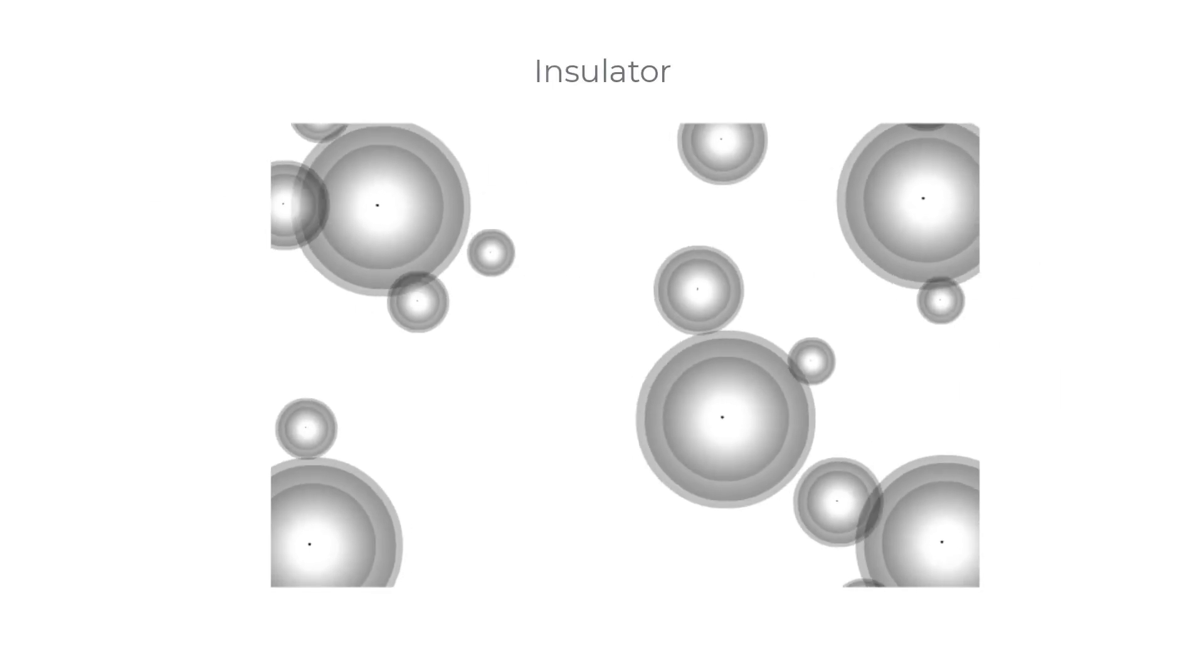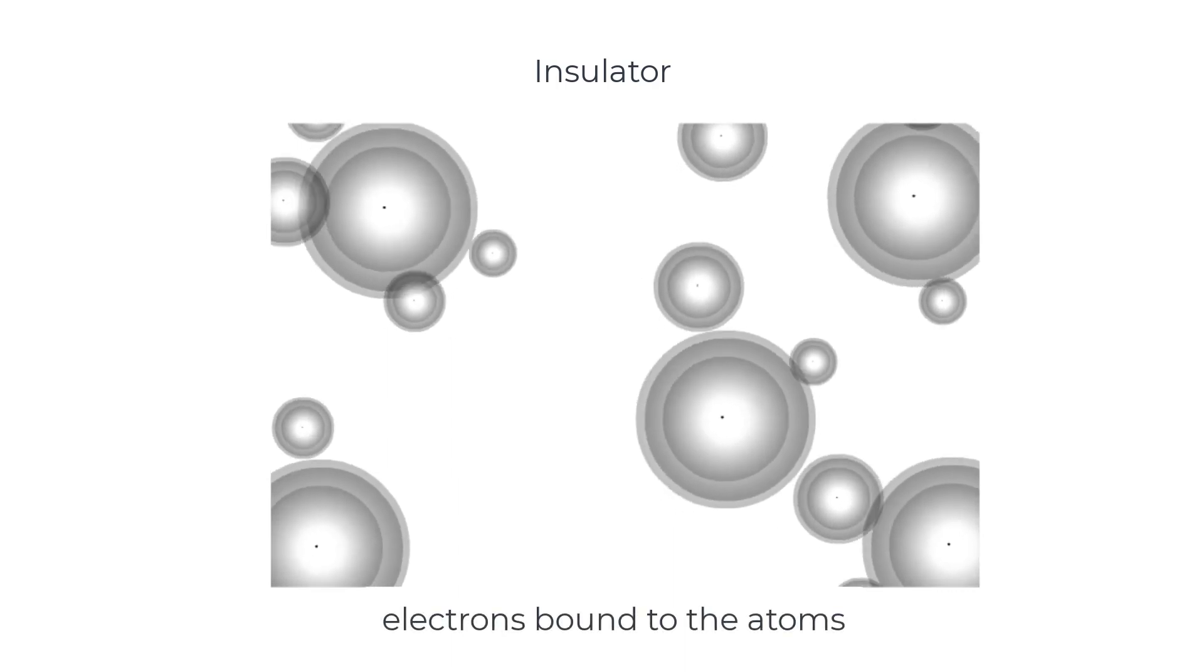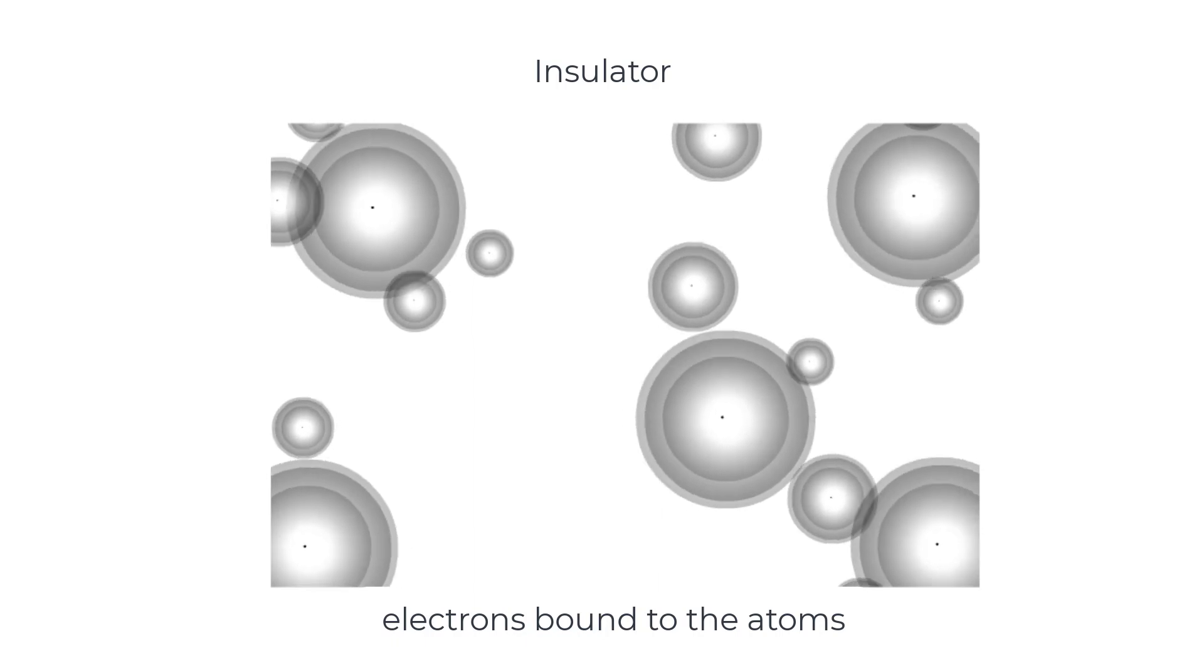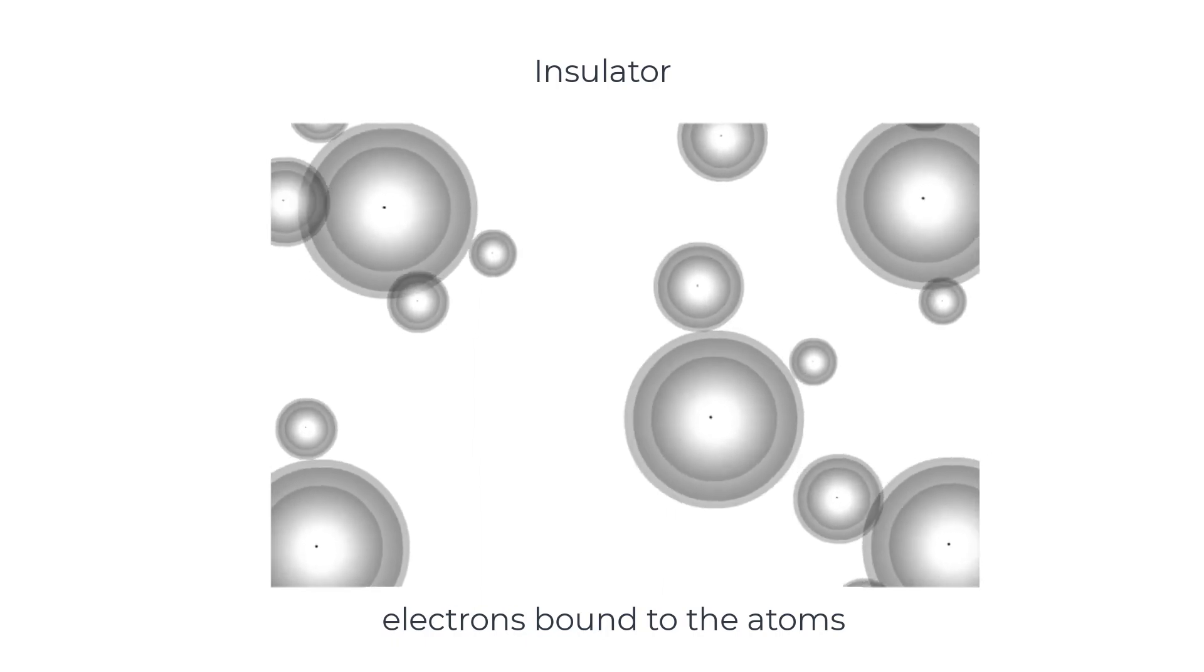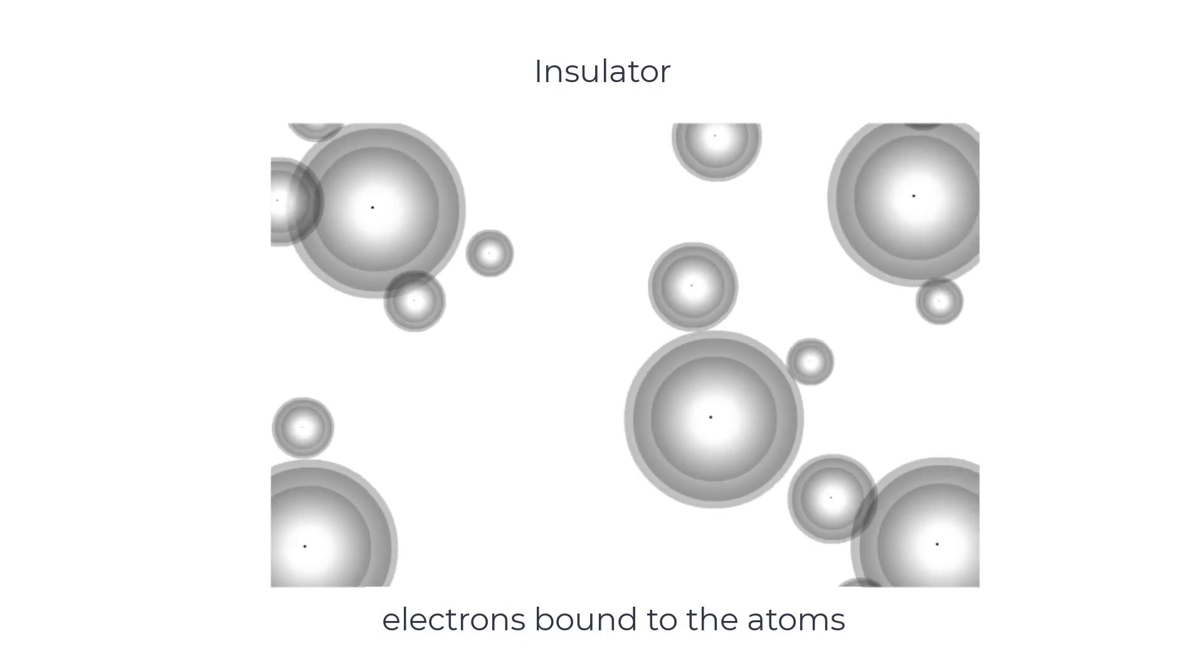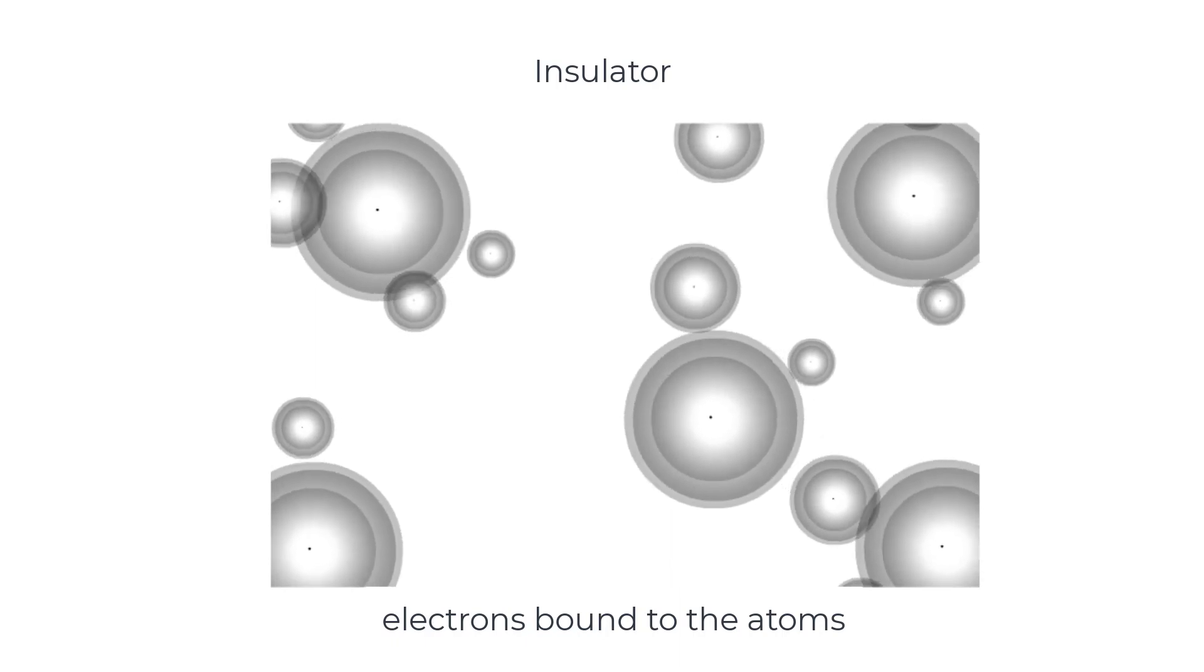Insulators like plastic have electrons too, but they're bound to the atoms, and so they can't be part of an electric current. In this visualisation of atoms in an insulator, the electrons are locked into clouds which stay with a particular atom, so they can't move through a circuit.